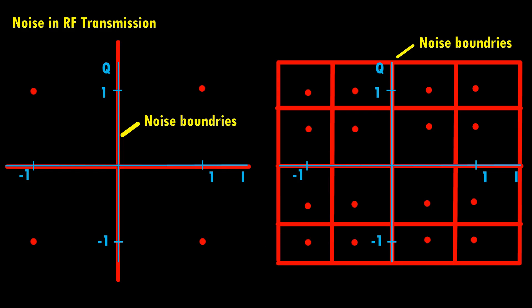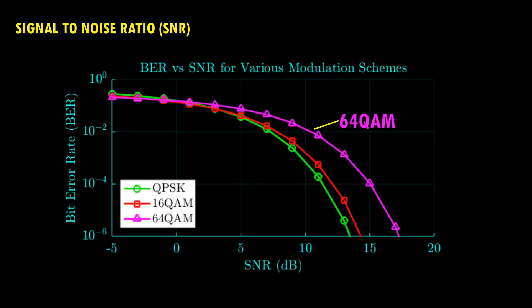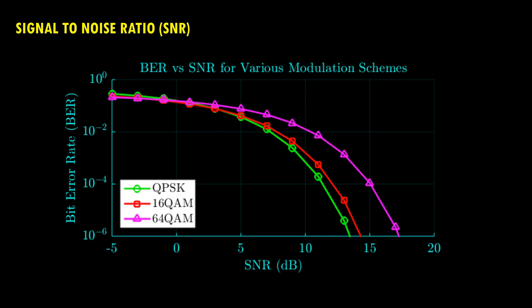For an acceptable error margin in the received bit stream, we need lower and lower noise levels as we use higher-order modulation. In technical terms, for higher modulation schemes such as 16-QAM or 64-QAM, we require higher signal-to-noise ratios to achieve the same error margin at the receiver side. Therefore, even though higher-order modulation schemes increase data rate, they also require lower noise levels for acceptable error margin.